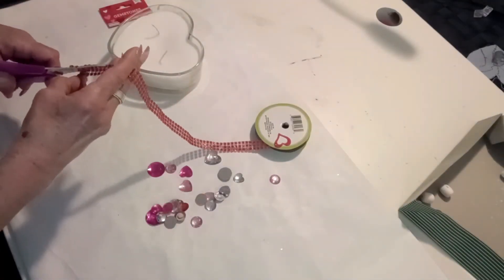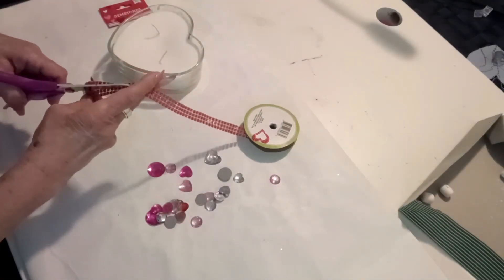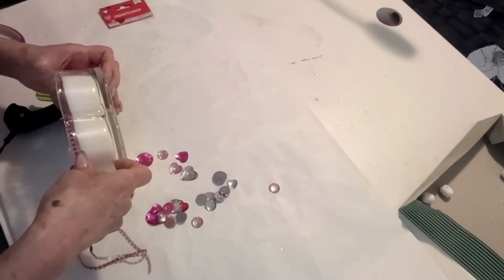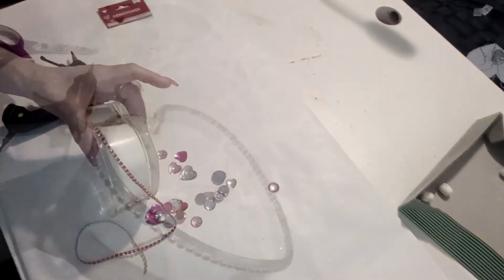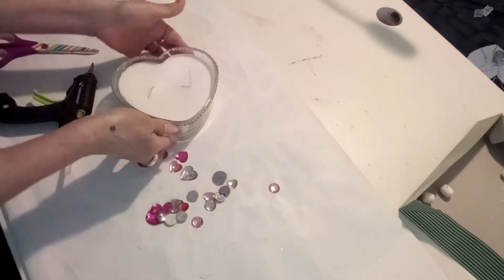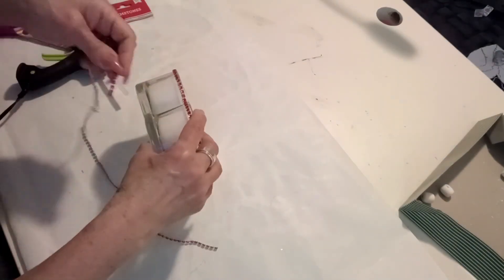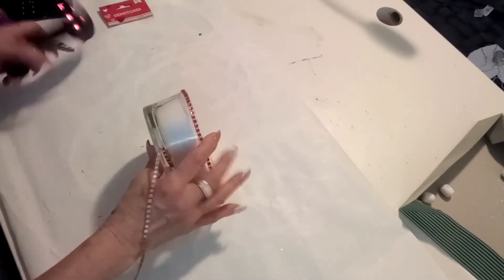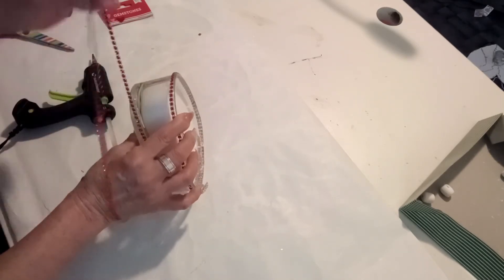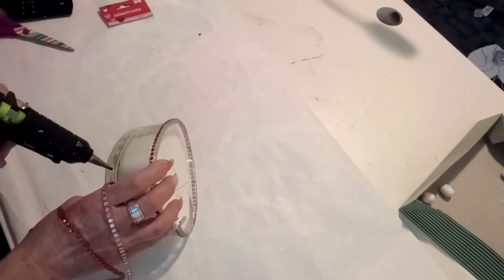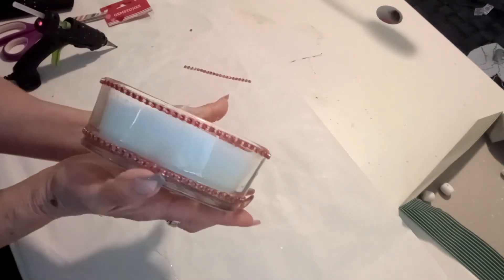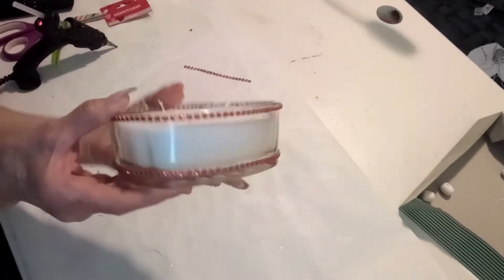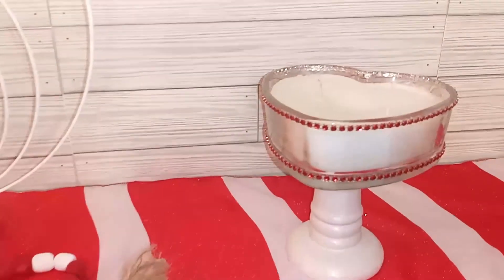I also have this glittery ribbon. I'm going to be cutting it and putting it on both borders, on top and in the bottom. And here they are all put together.